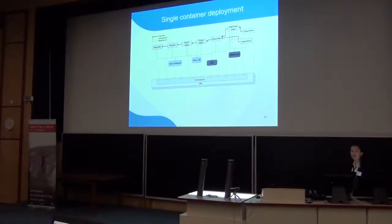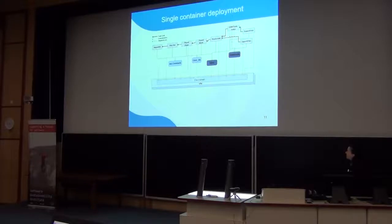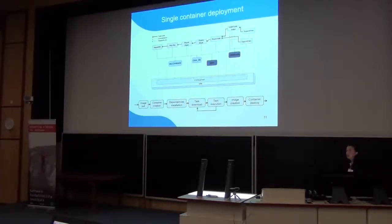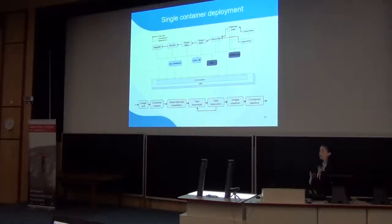Another option for deploying the workflow is to deploy all the tasks in the same container. For example, if there is no conflict or if the tasks can share the same dependencies, we can deploy everything in one container. In this case, the steps involve using just one container, installing everything, downloading the tasks, and executing them. By the end, we create an image for the whole workflow, not just for each task. So using this task description, we can either create images for all tasks individually or create an image for just the workflow.